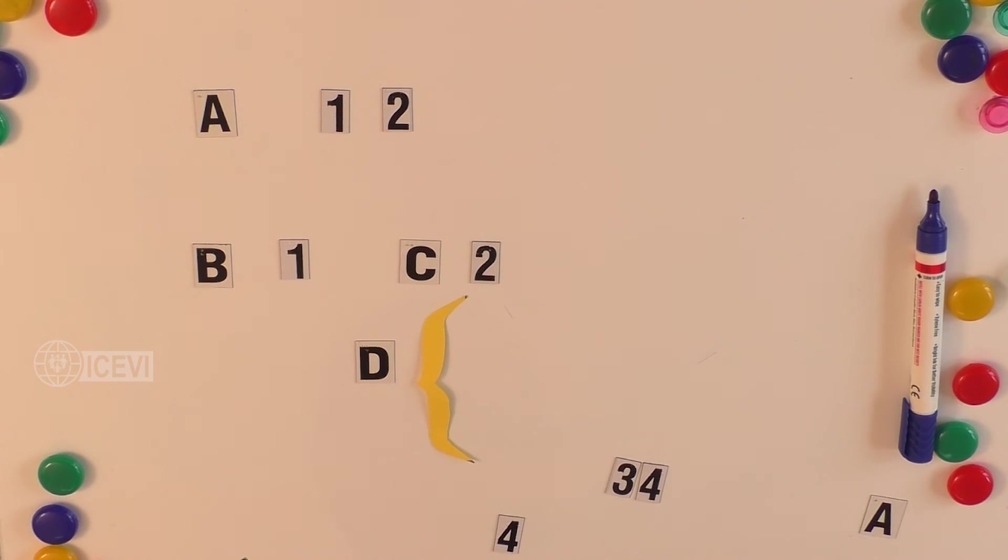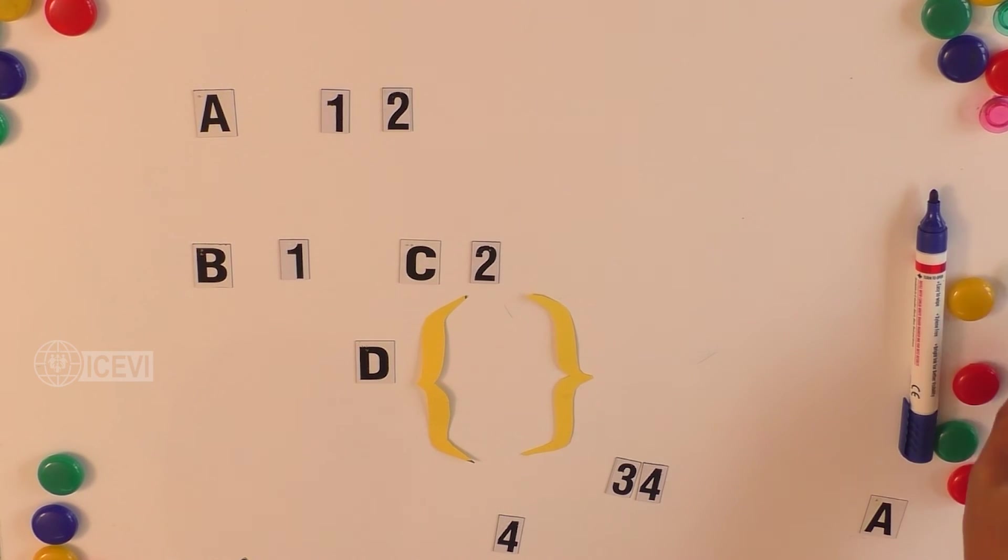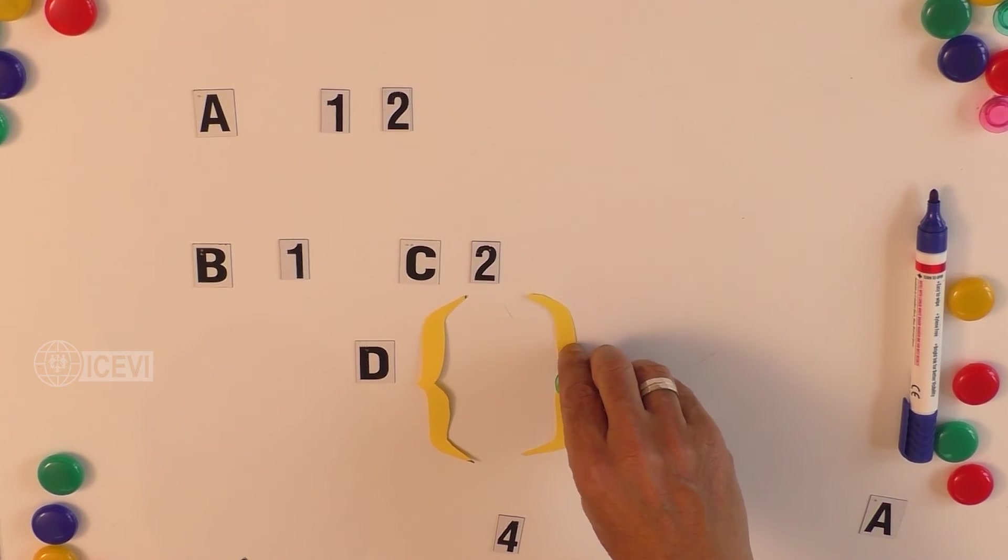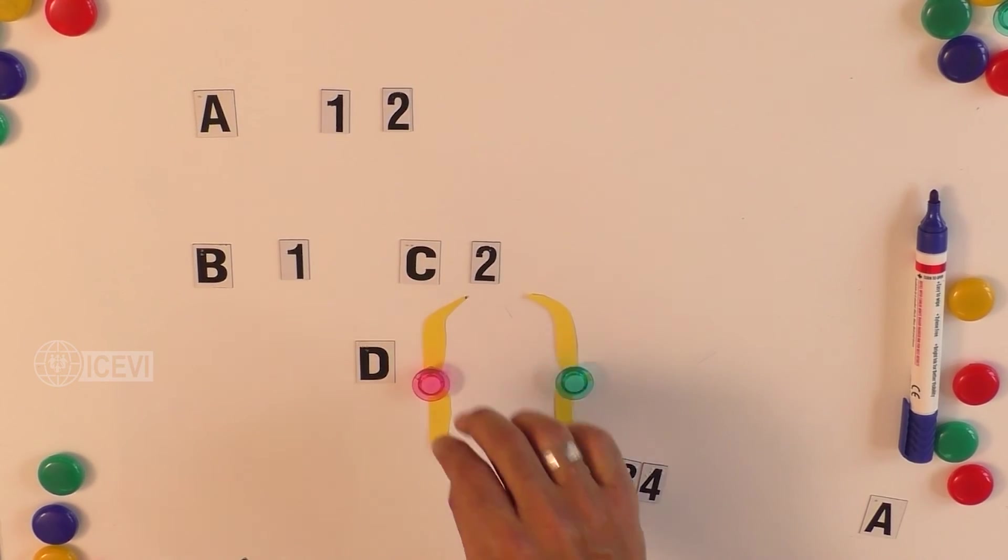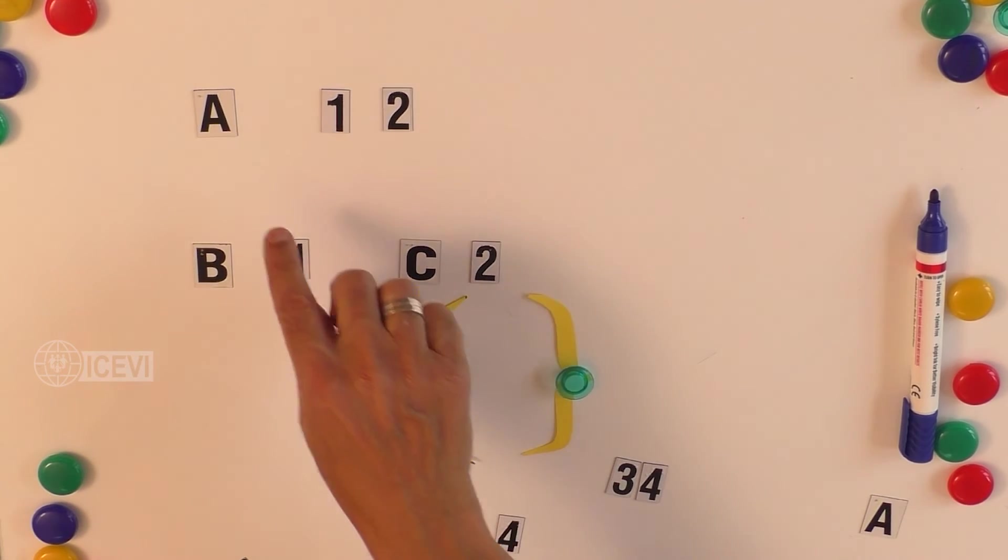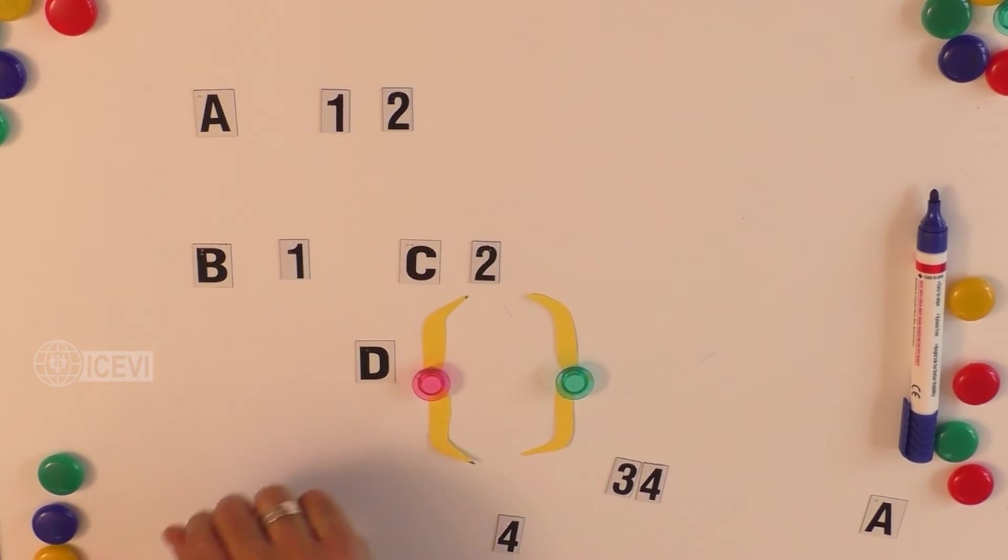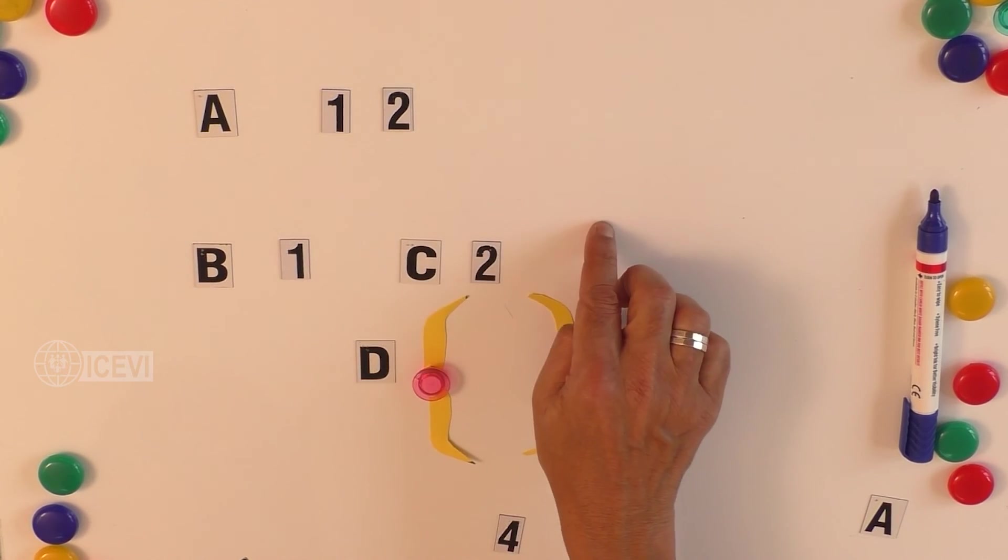The null set should always be included when we talk about the subset. What is a null set? We are indicating that it is a set but there is no element. So it is an empty set.